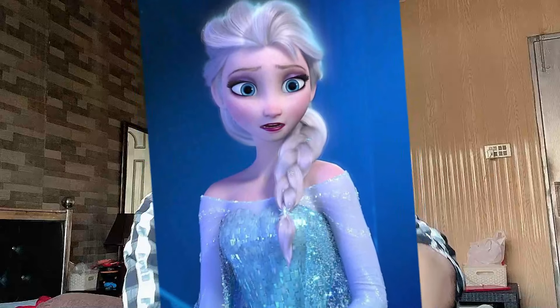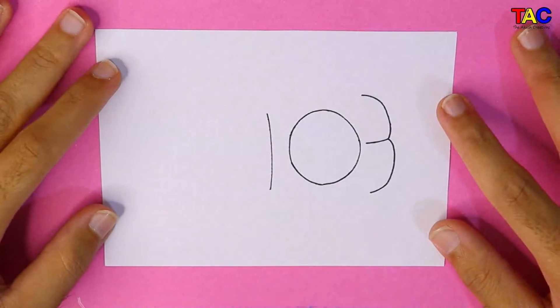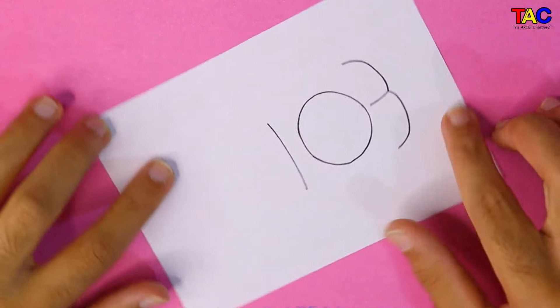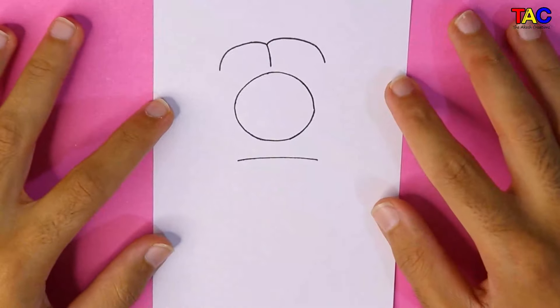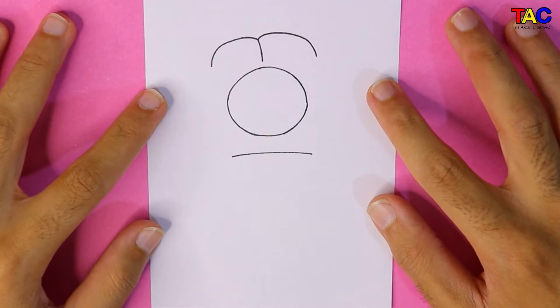Hi guys, I am Akash, welcome back to my channel. Today I am going to show you how to draw Elsa with number 103. Write number 103 on paper and rotate the paper. Now let's start drawing Elsa.